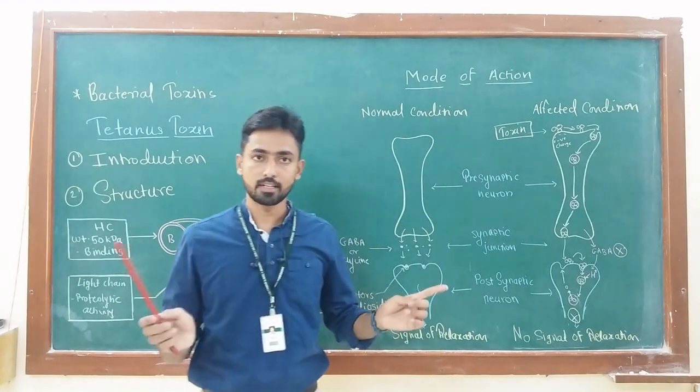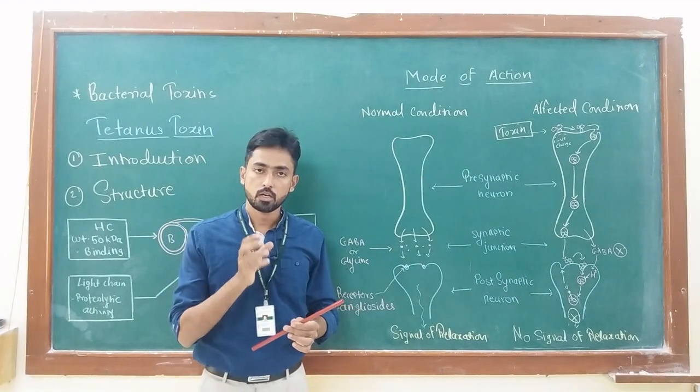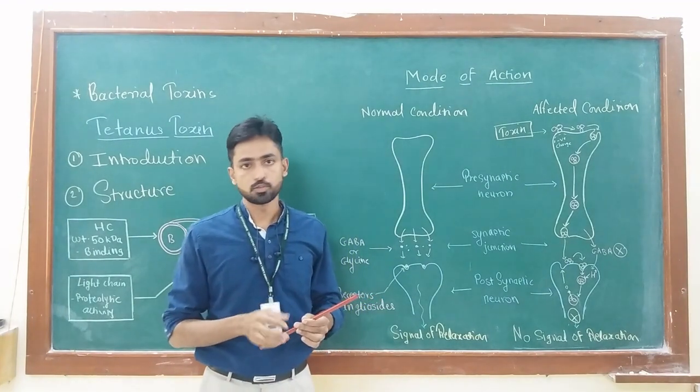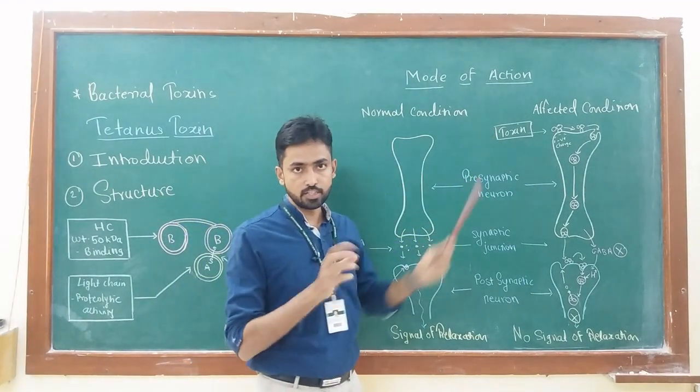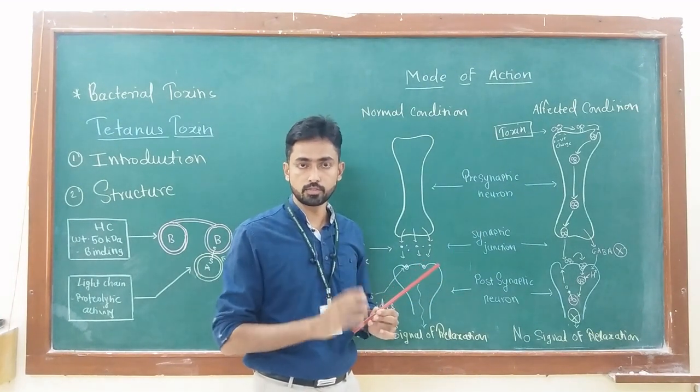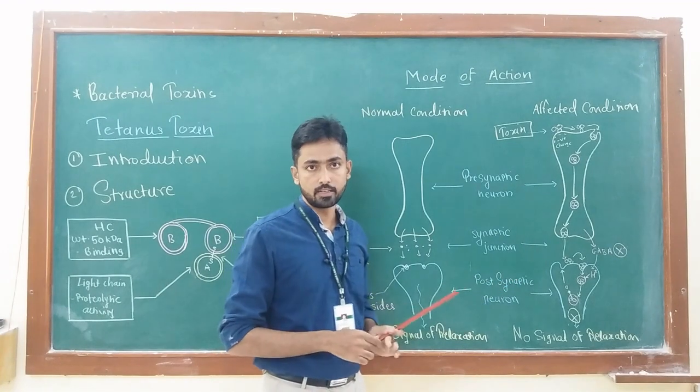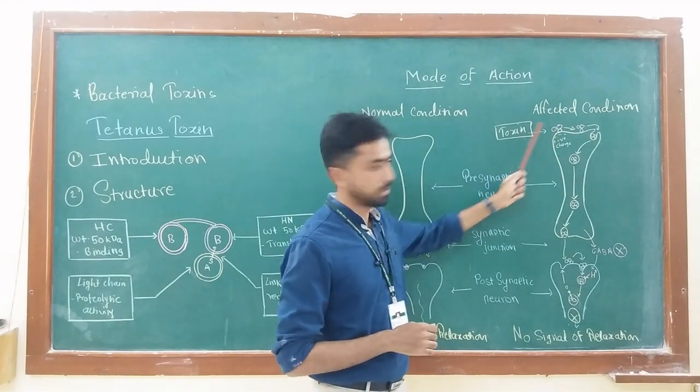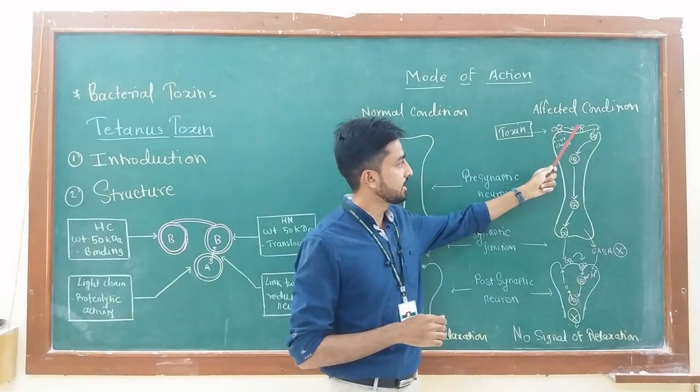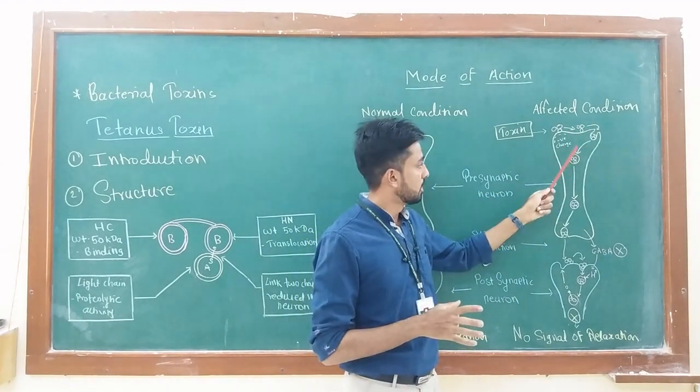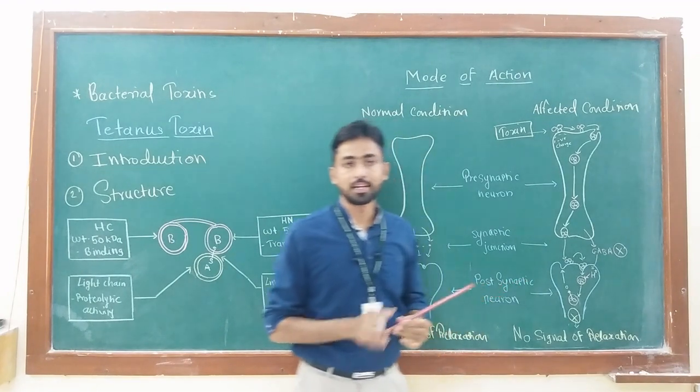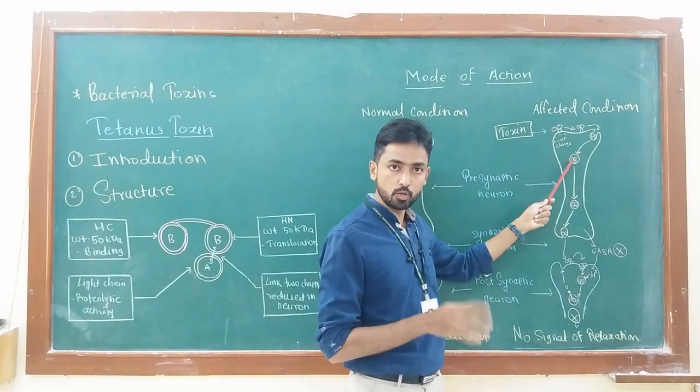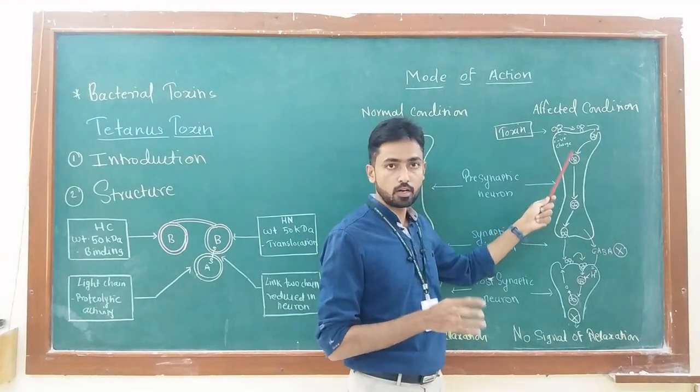We know that neurons are the longest cells in the body, and for transport of molecules or organelles inside the neuron, retrograde axonal transport is used. When this toxin reaches the central nervous system from the peripheral nervous system, the action of the toxin is started. Now in the first step, the toxin binds on the negatively charged membrane of the presynaptic neuron. After binding, the toxin migrates and gains entry inside the neuron by the process called receptor-mediated endocytosis.